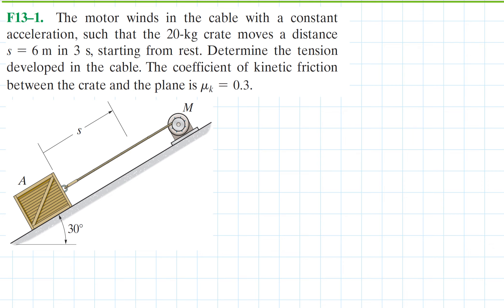In this problem, the motor winds in the cable — here is the motor and the cable — with a constant acceleration such that the 20-kilogram crate moves a distance of 6 meters in 3 seconds starting from rest. We want to determine the tension developed in the cable. The coefficient of kinetic friction between the crate and the plane is 0.3.